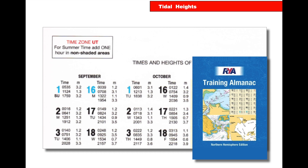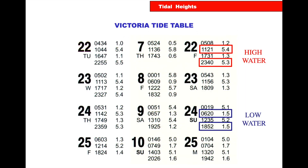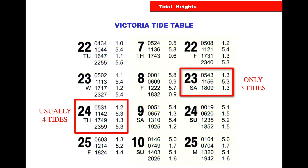At the top left it says time zone UT — if it's summer time, add one hour for the non-shaded areas. For example, looking at the tide tables for Victoria on Friday the 22nd: high water is at 11:21 with a height of 5.4 metres above chart datum; the second high water is at 23:40 at 5.3 metres. On the 24th, low water at 06:20 is 1.4 metres, and at 18:52 it's 1.5 metres. Most days show 4 tides, but some days may only have 3 due to the lunar calendar fitting — don't worry if the day you pick only has 3 tides.